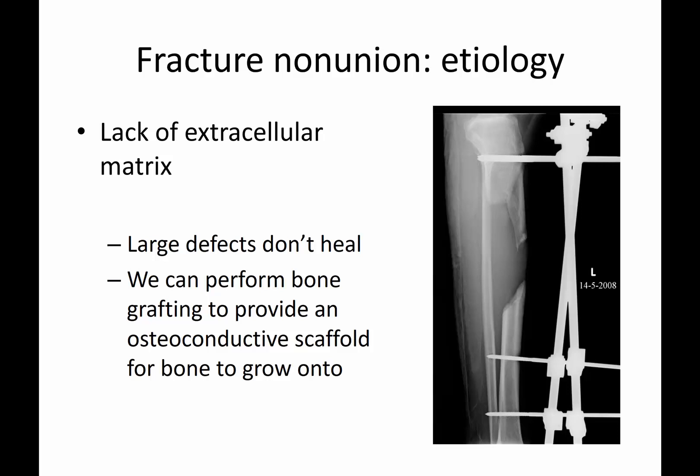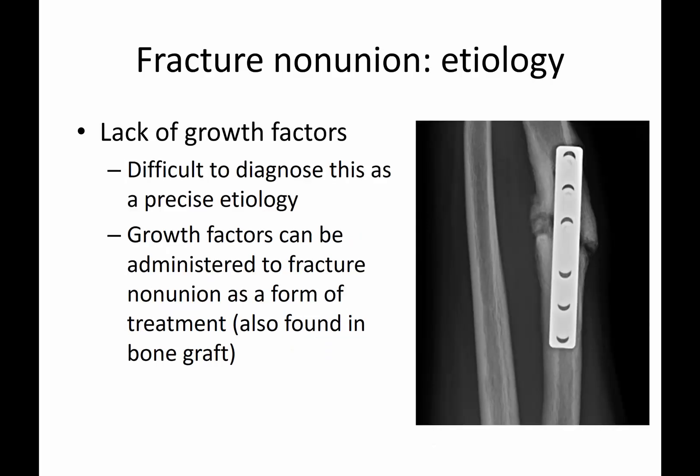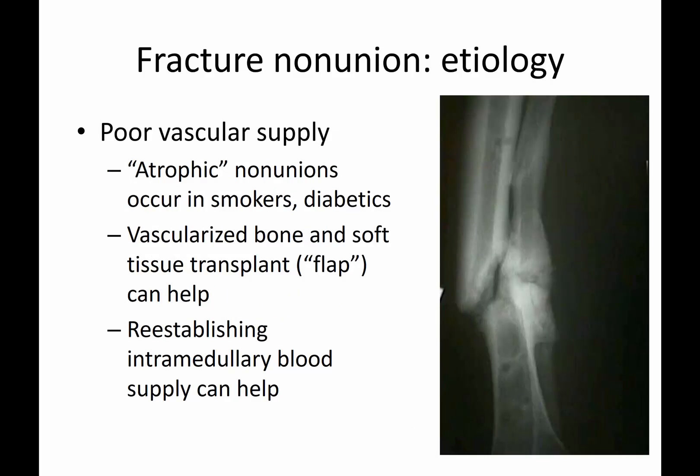You can also have a non-union due to lack of extracellular matrix — for instance, a massive gap that simply can't heal. You may need bone grafting to provide an osteoconductive scaffold, some type of material for bone to grow onto. Lack of growth factors can sometimes be hard to diagnose as a precise etiology — you can't always look at an x-ray and say there's a lack of growth factors. But with an atrophic non-union, you can administer growth factors either with bone graft or off-the-shelf growth factors to help the fracture heal.